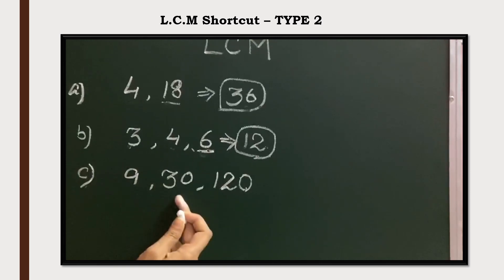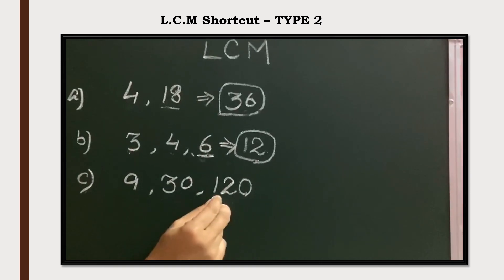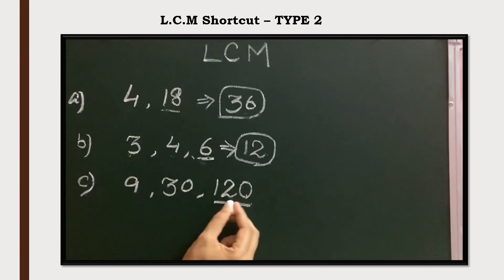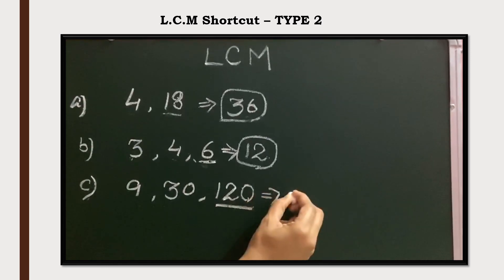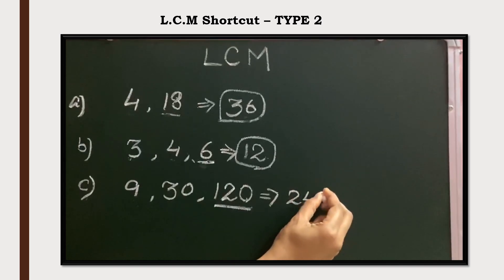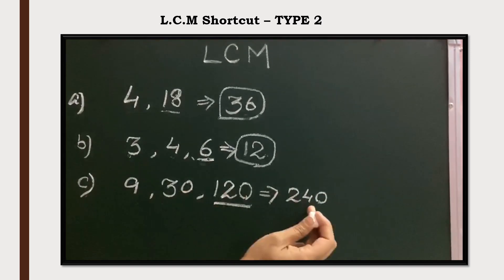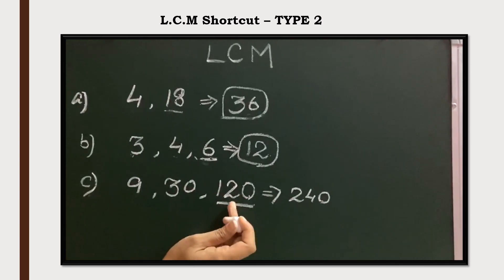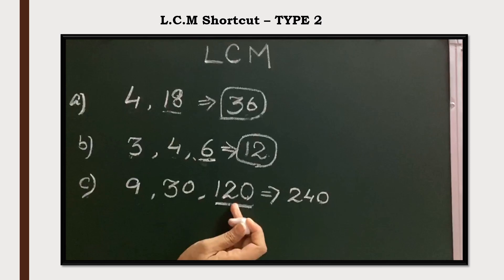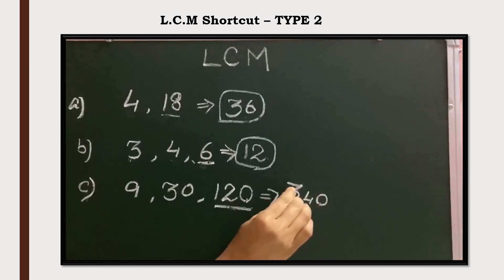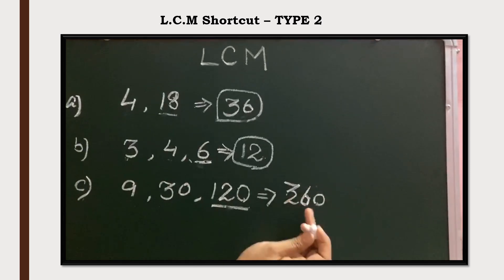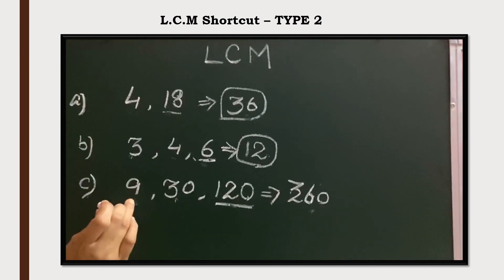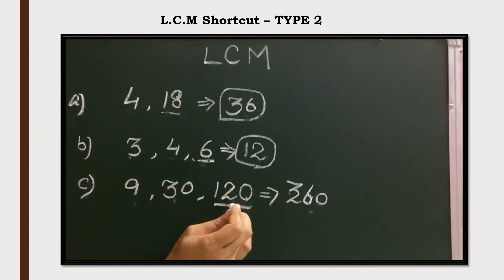Next example: 9, 30, and 120. The bigger number 120 is a multiple of 30, but it is not a multiple of 9. So we take the multiples of 120. The next multiple is 240 — 240 is a multiple of 30, but 240 is not a multiple of 9. So take the next multiple: 120 threes are 360. Now check: 360 is a multiple of 30, and 360 is a multiple of 9. So the LCM of 9, 30, and 120 is 360.